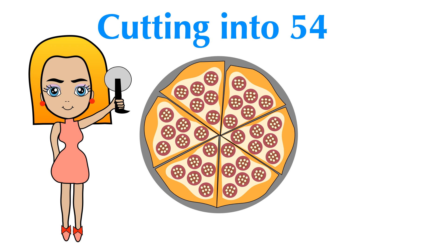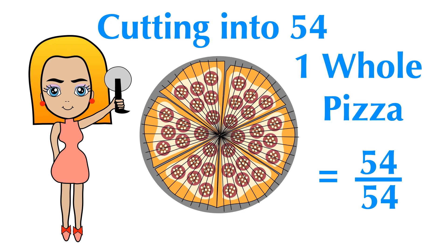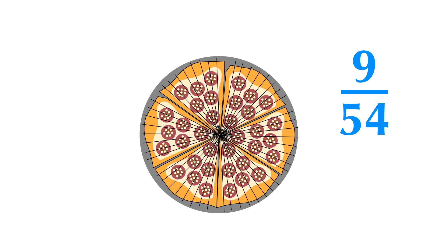Judy is going to cut the whole pizza into 54 slices. We have 1 whole pizza with 54 slices; 1 whole pizza equals 54 over 54 pizza. 9 over 54 of the pizza is 9 on the top and 54 on the bottom. The whole pizza is 54 slices, and Ginny requested 9 slices out of 54 slices.